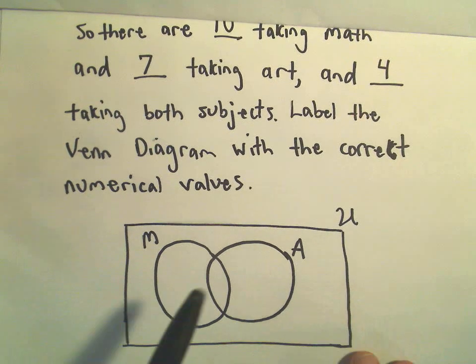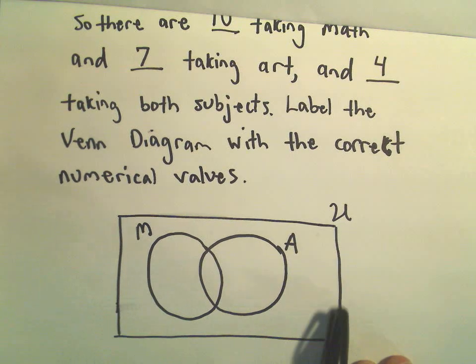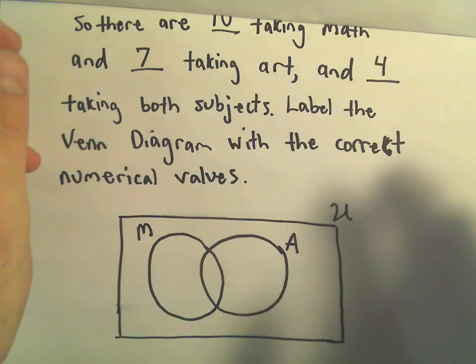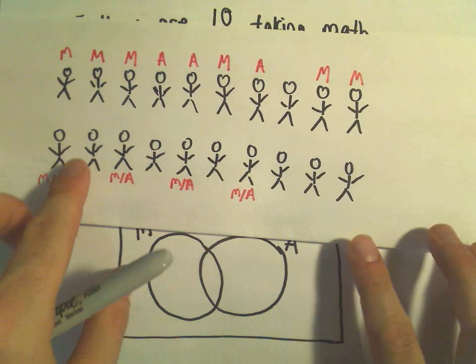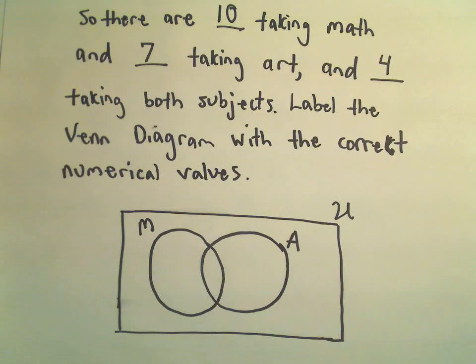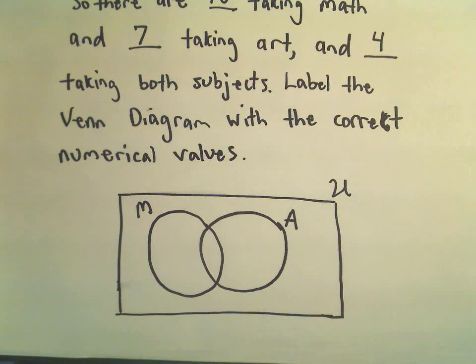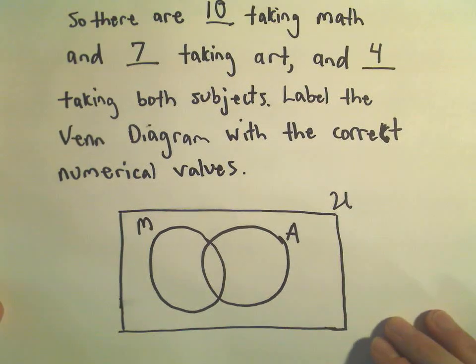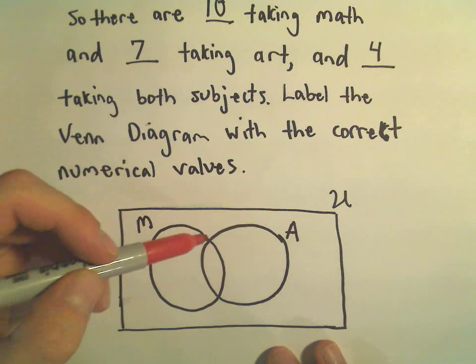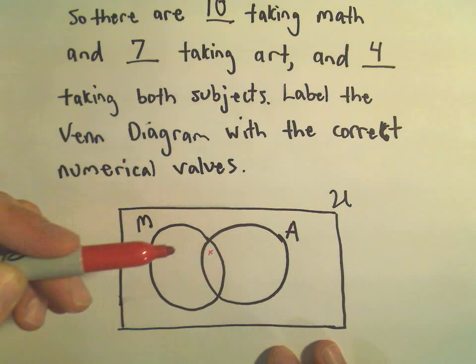Usually when you make a Venn diagram, you just make a little box. U stands for your universe. So in this problem, our universe would simply be these 20 people that we're talking to. And we just want to fill in some numerical values. I think that typically when you start filling in numerical values, you want to fill in the overlap. And you'll see as you go through these, there's a reason for that. So this little region right here in the middle. I'm going to put a little X there.